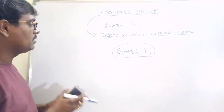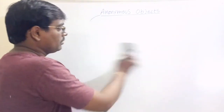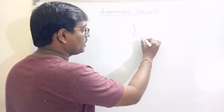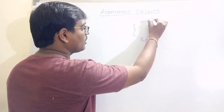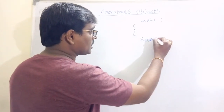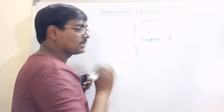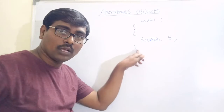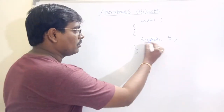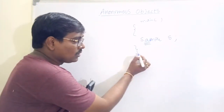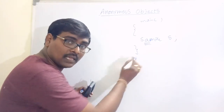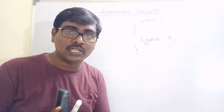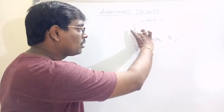See one example. Suppose within the main, we have Sample S. Once we come out of this block — say there are three statements — then only the object S is destroyed. That is, S is local to this block.